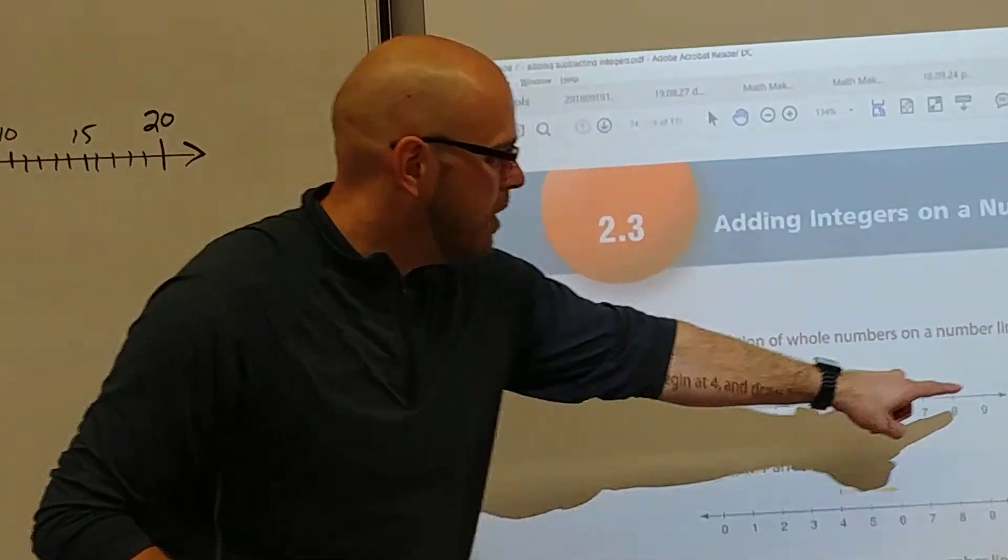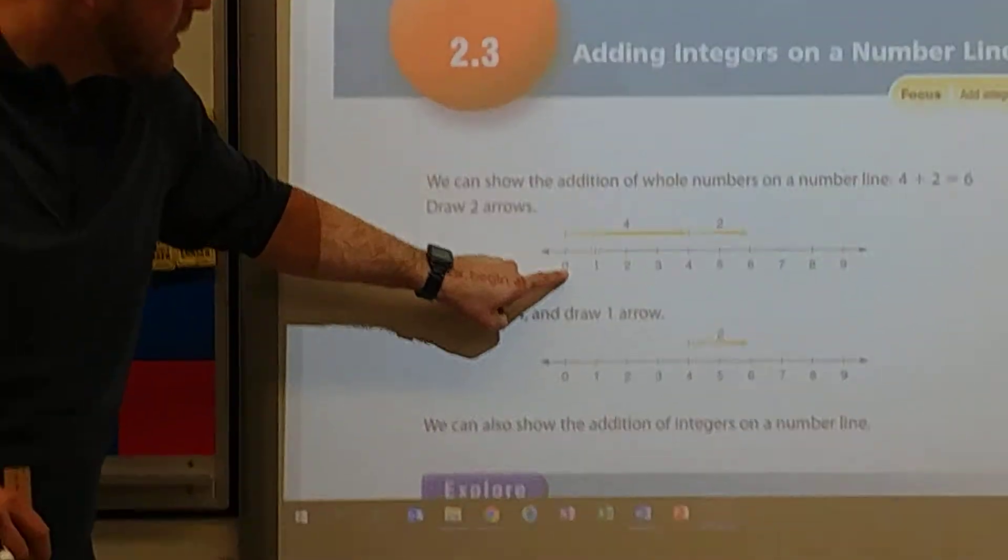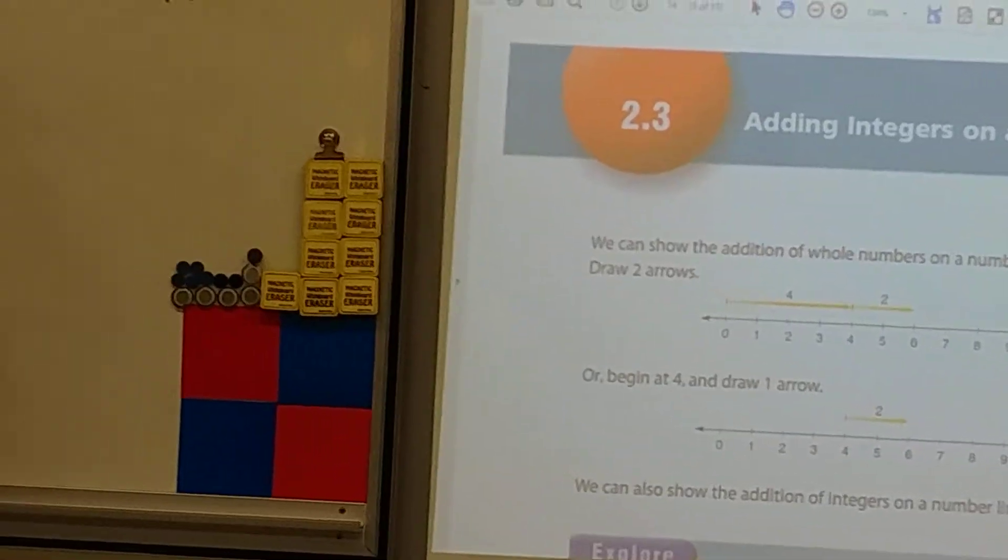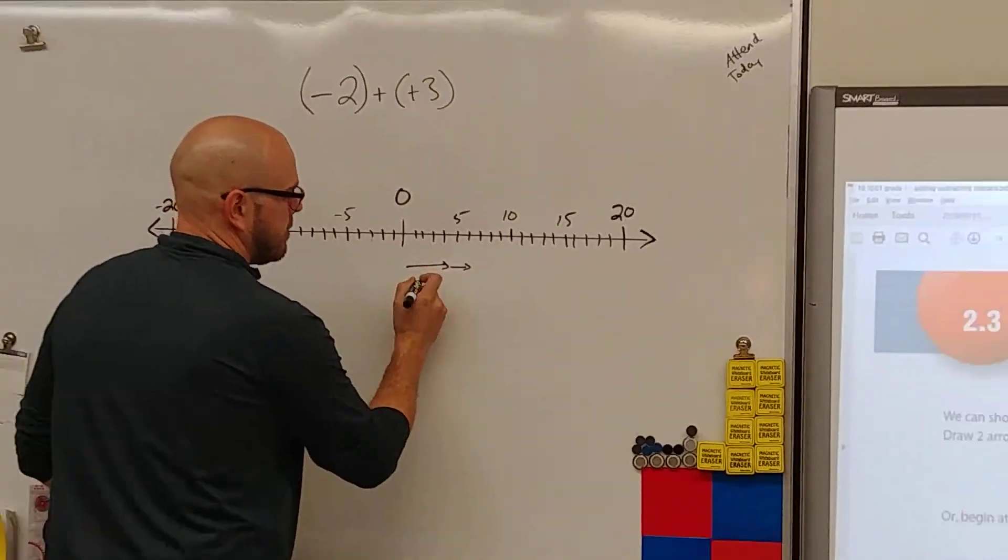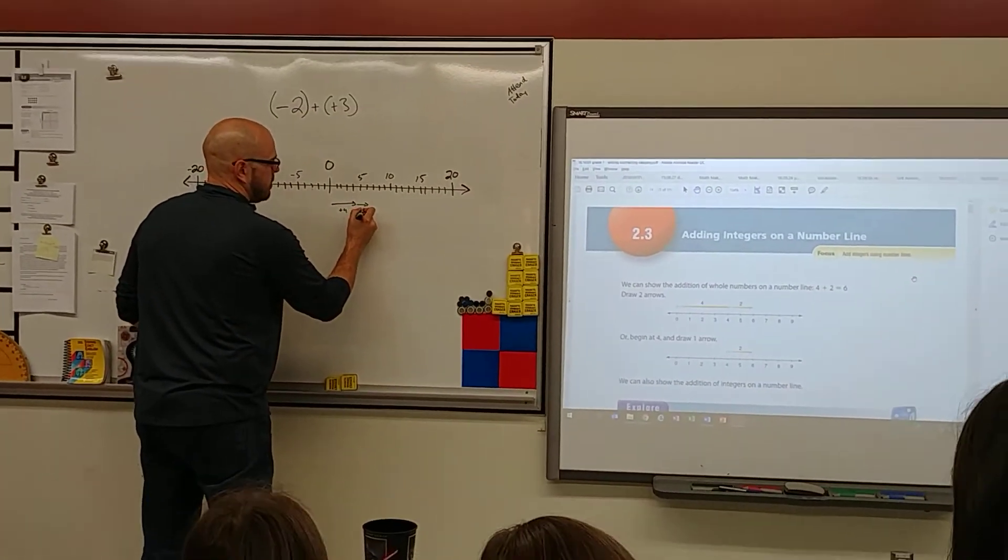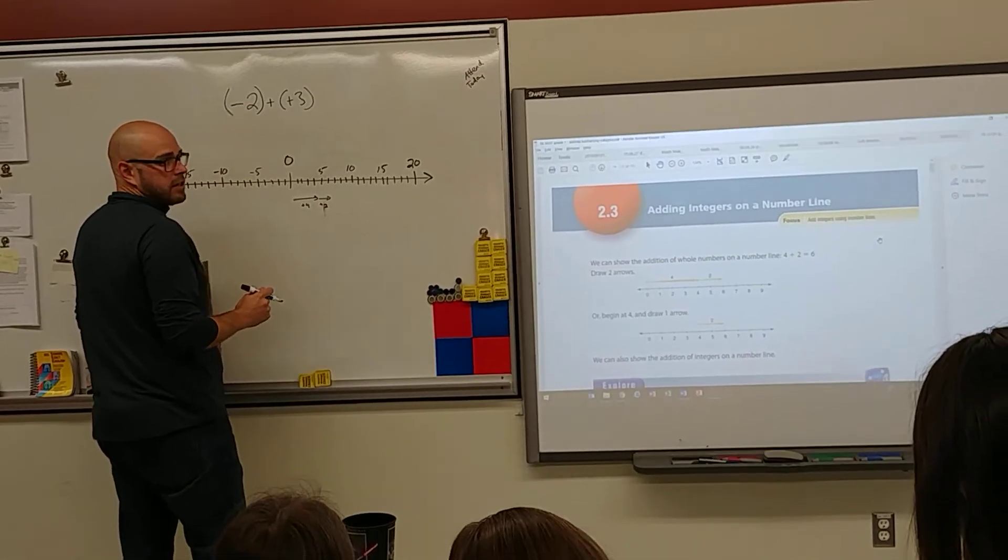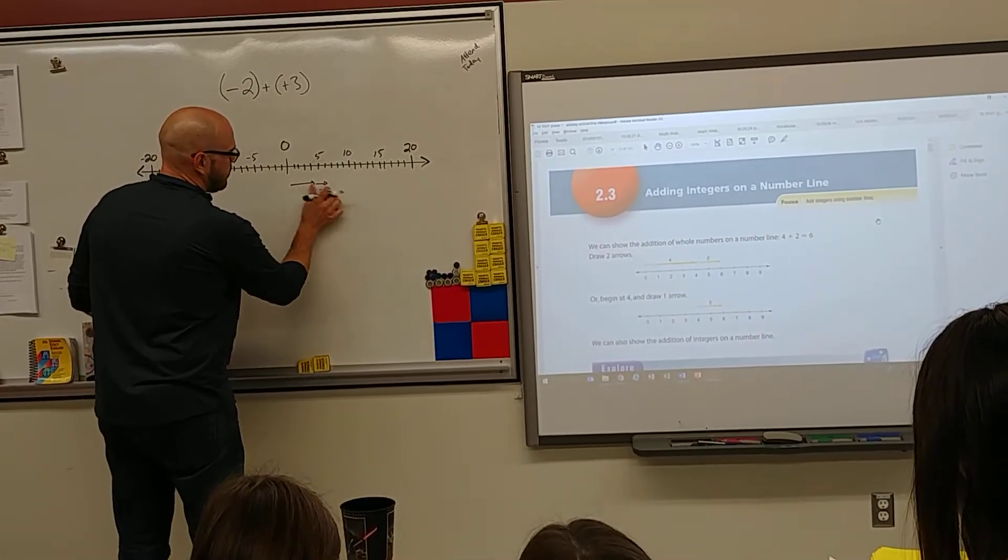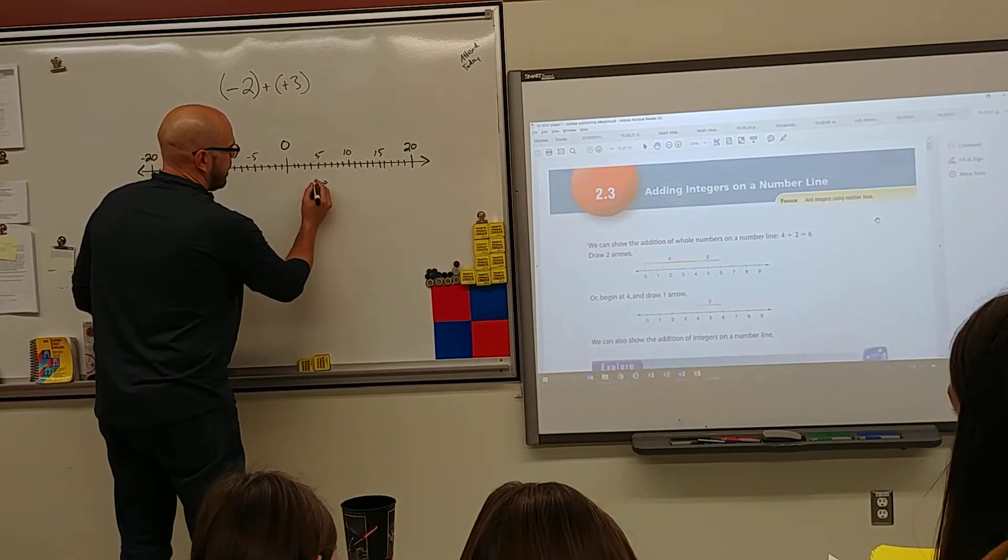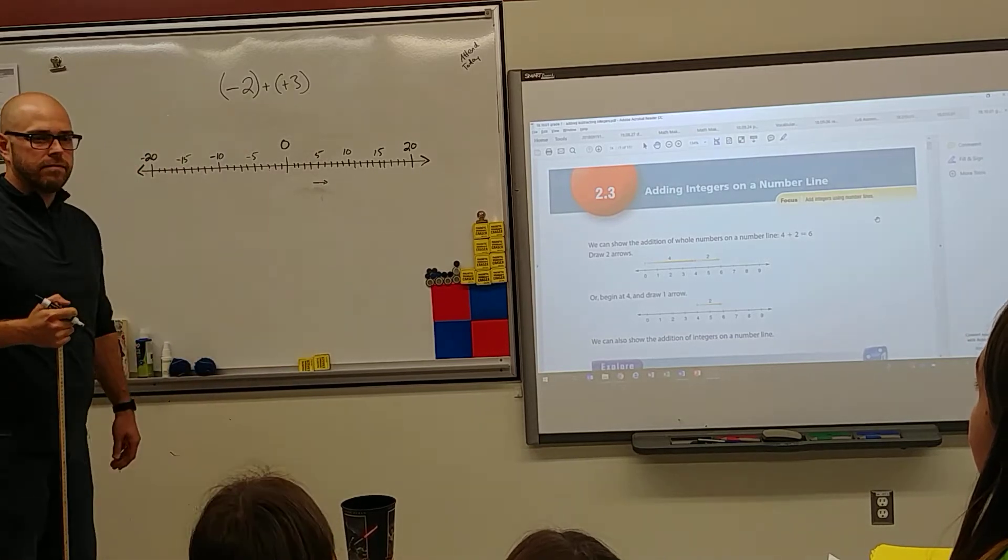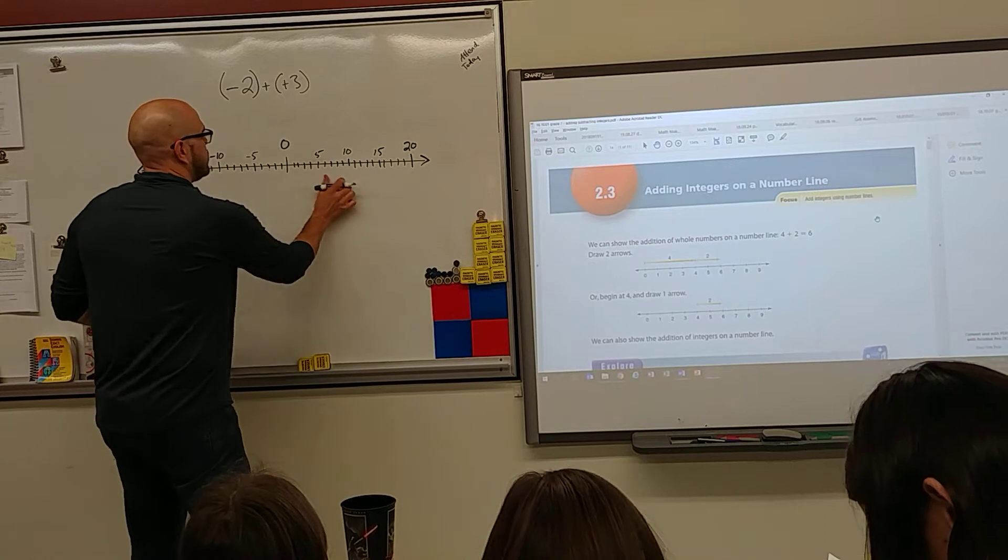This is positive 4 plus positive 2. Starts at the 0, goes to the 4, then 2 more. Positive 4, positive 2, equals positive 6. There's a second way to do it though. You can just start at 4, add 2, and that's showing. So this is positive 4 plus positive 2, two ways.